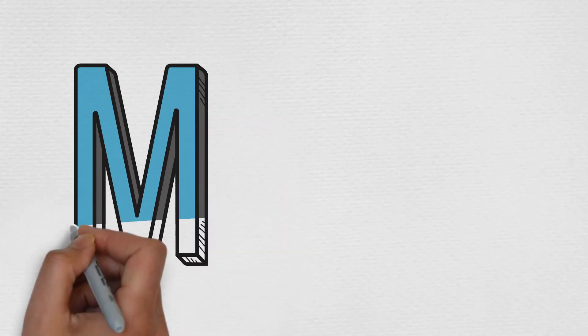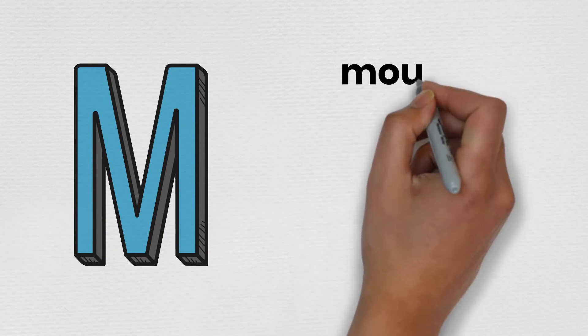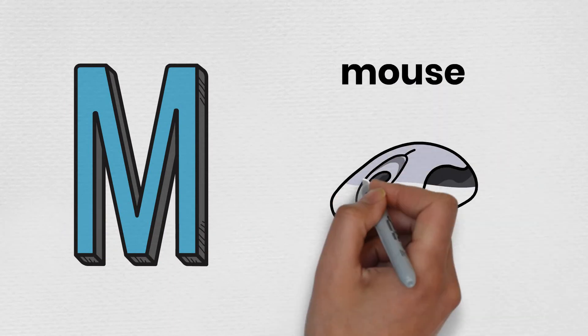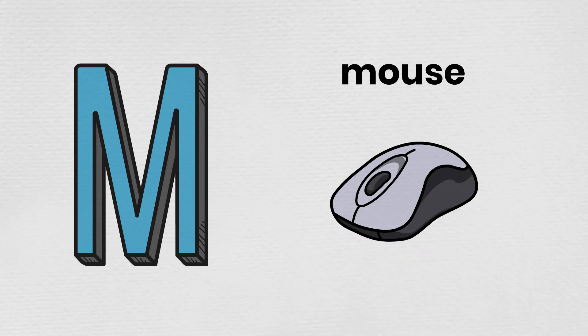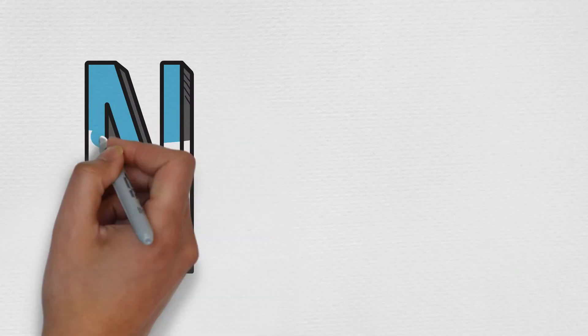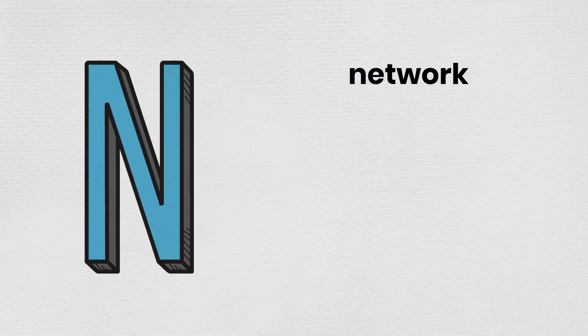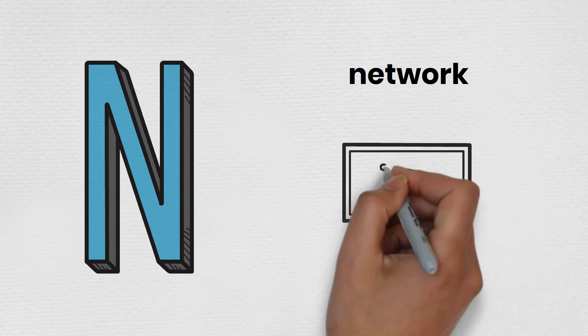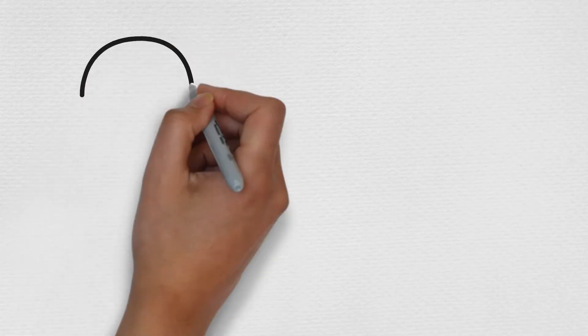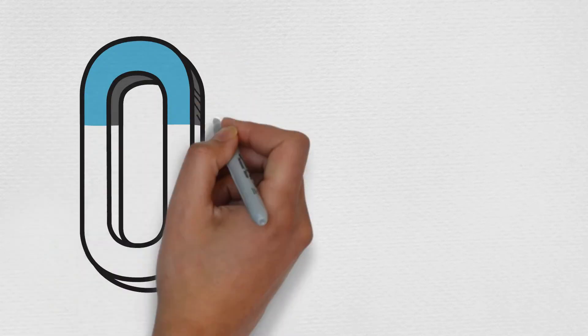M is for mouse. N is for network. O is for online.